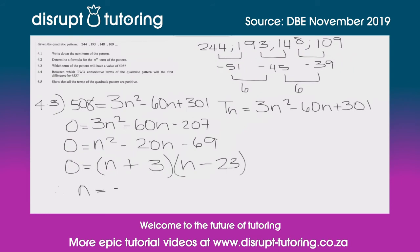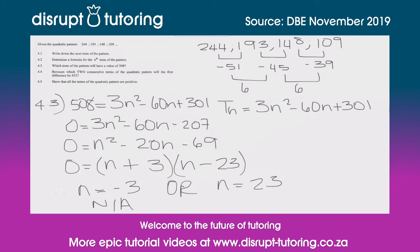So n equals minus 3 or n equals 23. We can't have a negative term position in a sequence, so n equals minus 3 is not applicable. Our answer is n equals 23. This is a very important question to get right, as it comes up in most tests and exams.